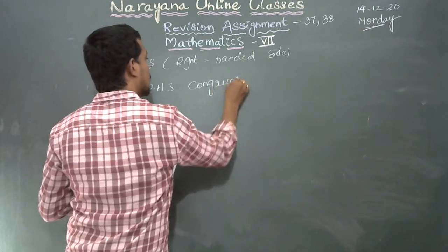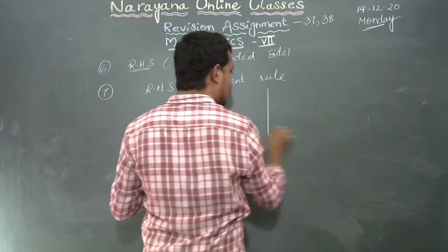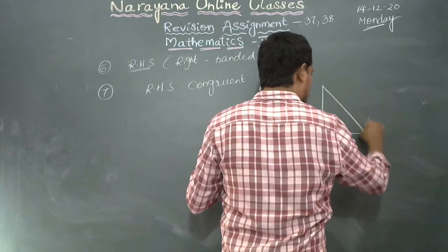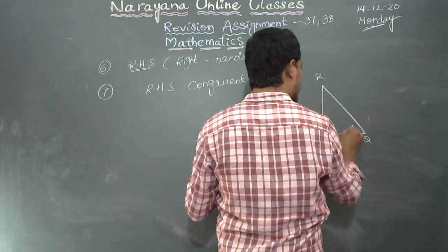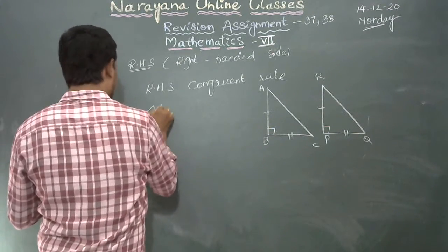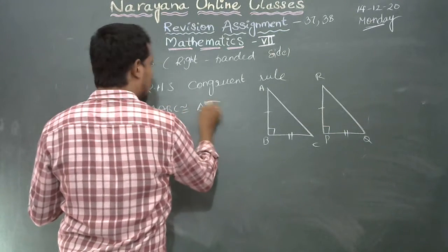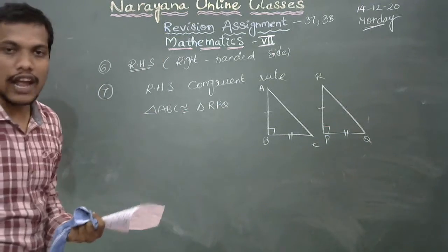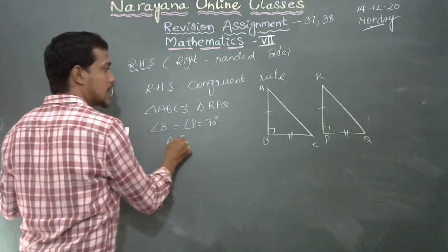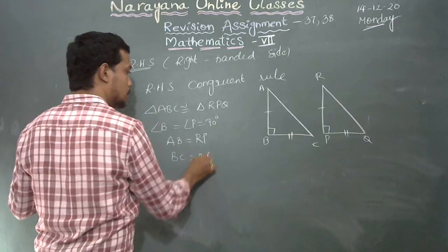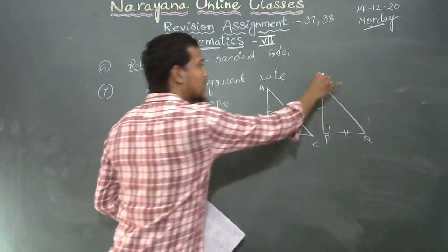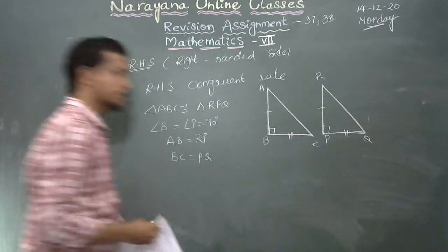We are given two triangles. ABC is one triangle and PQR is another triangle. When the two right angle triangles, triangle ABC is congruent to triangle RPQ. Given angle B equal to angle P equal to 90 degrees, then AB equal to RP, BC equal to PQ. In the right angle triangle, one angle should be 90 degrees and the AB side is equal to RP side, and the BC side is equal to PQ.